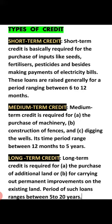After that comes long term credit, which is required for the purchase of additional land or for carrying out permanent improvements on existing land. When a farmer takes a loan for new land or improvements on existing land, that falls under long term credit — because it is not possible to repay within 6 months or even 5 years. The repayment period is 5 to 20 years.